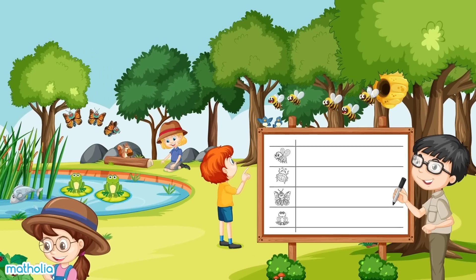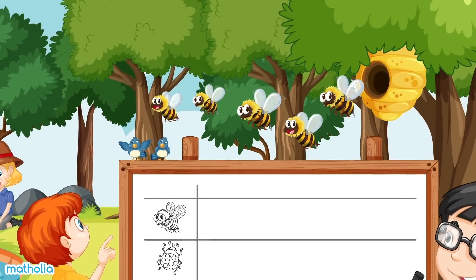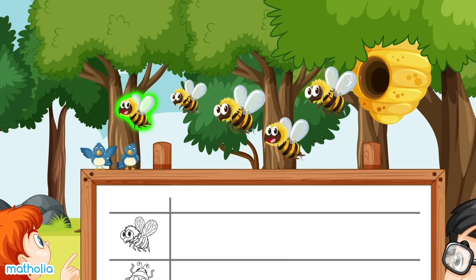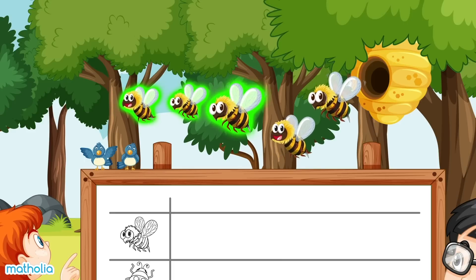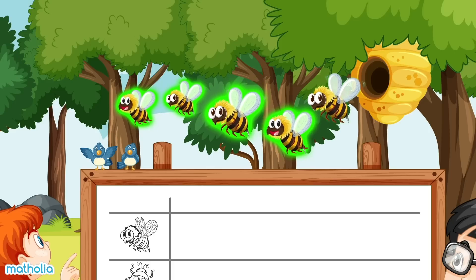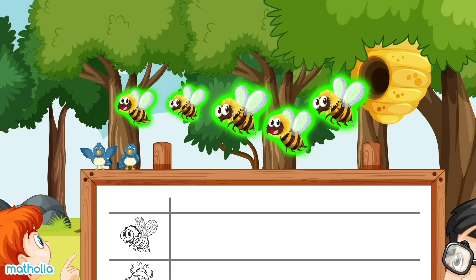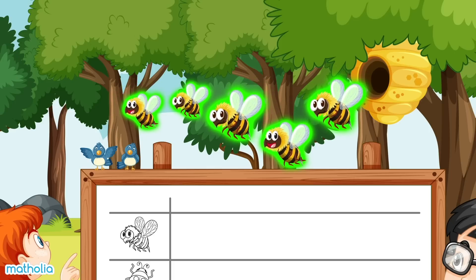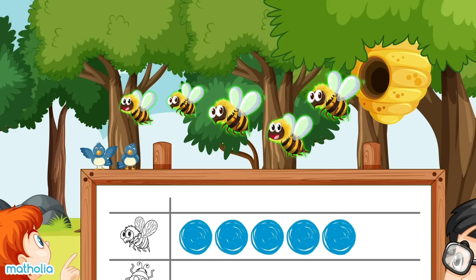Look at the bees. How many bees are there? One, two, three, four, five. There are five bees. So let's draw five circles on our picture graph.